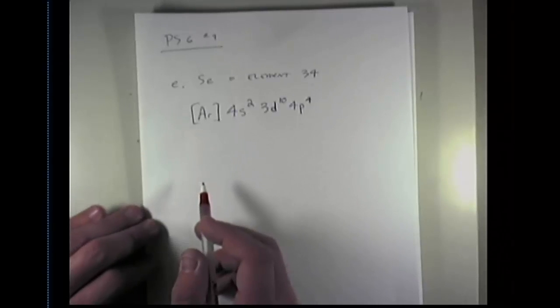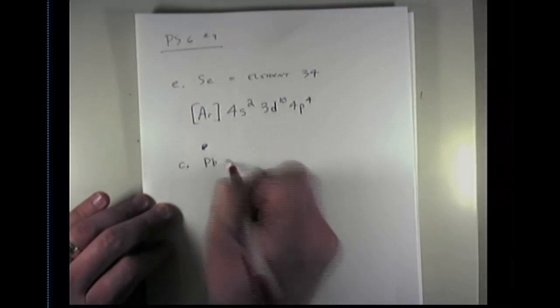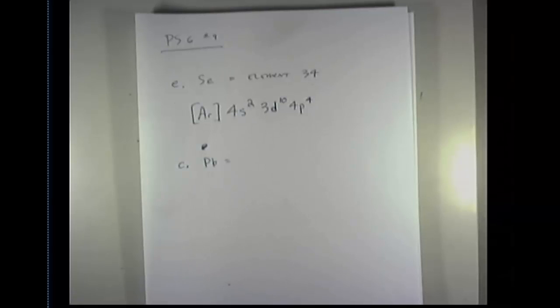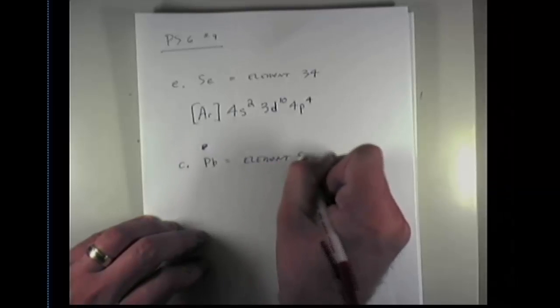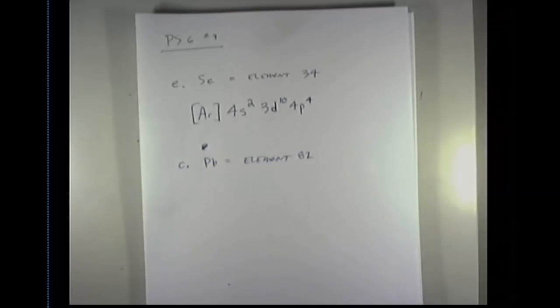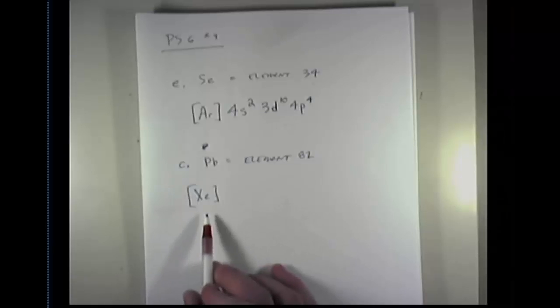Let's see if we can pick a different element. We'll pick lead. So letter C is lead. If I look at the periodic table, lead is element number 82. Once again, if I were to write the entire electron configuration for lead, it would be very long. But I don't have to. I'm going to look and find the element that precedes lead in the noble gas column. The noble gas that precedes lead on the periodic table is xenon, element number 54. So I write xenon in brackets.